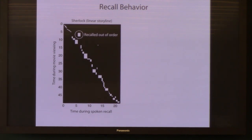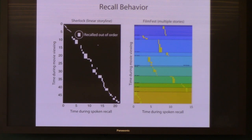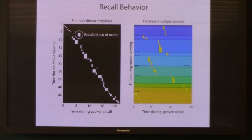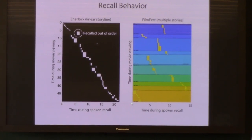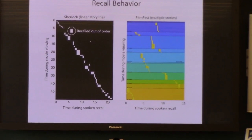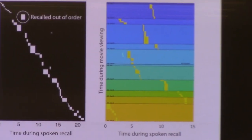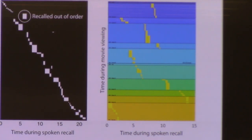For the Film Festival, we get a different kind of behavior. Each one of the colored horizontal bands is a different one of the 10 movies, and the yellow boxes are the scenes as people recall them. Reading in the order of recall, this person first recalled the last movie, then the second movie, and so on — they're bouncing around in time. Their instructions are to recall them in any order they want, and this is what you get.